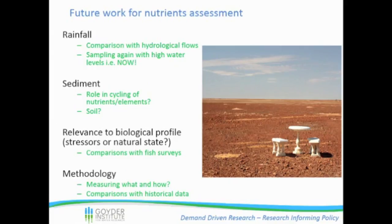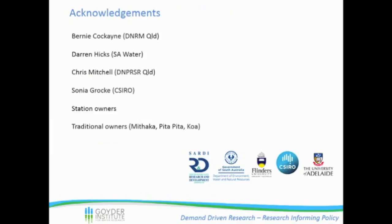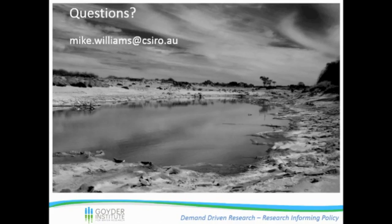For future work, it would be great to sample when there's a lot of rainfall around, such as now apparently. The sediment showed quite high levels of nutrients, and how important they are in cycling nutrients or elements through the system - and also the soil in the system as well - is important to understand. It's very important to put this chemical data into a biological context: are the fish happy, are the invertebrates happy? And most importantly, methodology was a little bit tricky because we weren't really sure how some of the historical data was generated. We need to make sure that when we do these comparisons we're comparing apples with apples, or at least Granny Smiths with Fugees. I'd like to acknowledge all of these people - we couldn't have done the sampling without their help. Thank you.